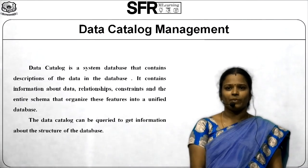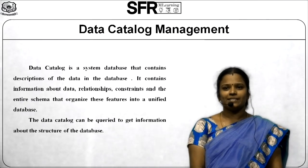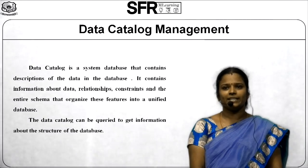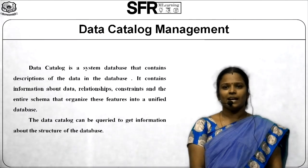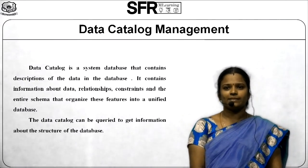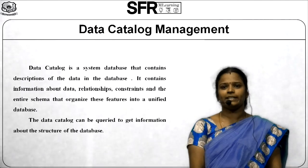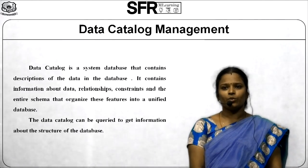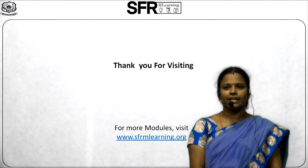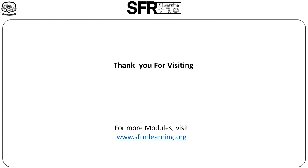Data Catalog Management. A data catalog is a system database that contains a description of the data in the database. It contains information about data, relationships, constraints, and the entire schema that organizes the features into a unified database. The database catalog can be queried to get information about the structure of the database. These are all the functions of DBMS. Thank you.